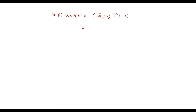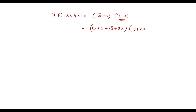Let me simplify this. For the first term, the missing variables are y and z. I can add them as: (w̄ + x + yȳ + zz̄), because y·ȳ = 0 and z·z̄ = 0. Similarly, for the second term I can add w and x as: (y + z + ww̄ + xx̄).